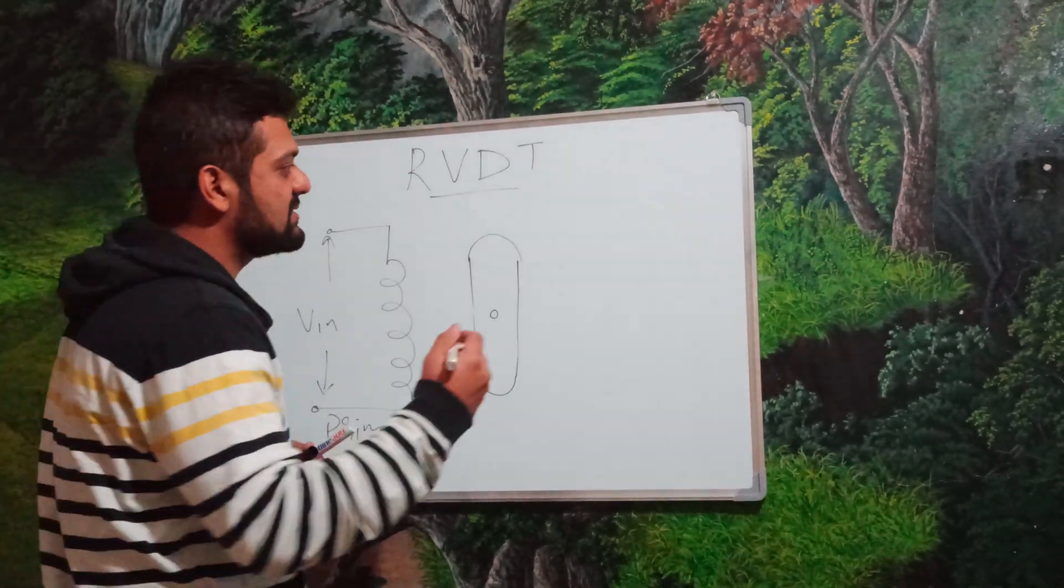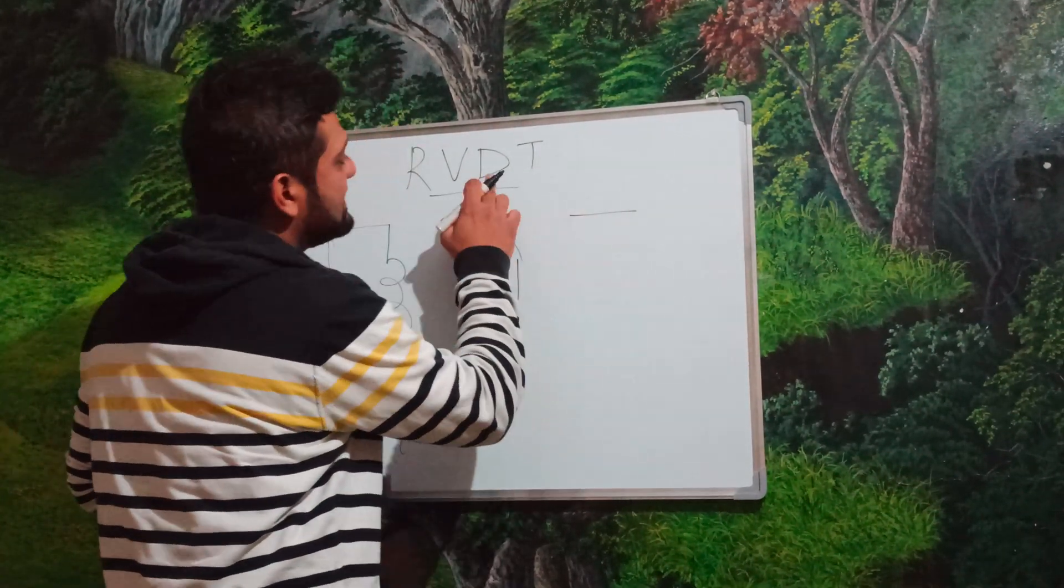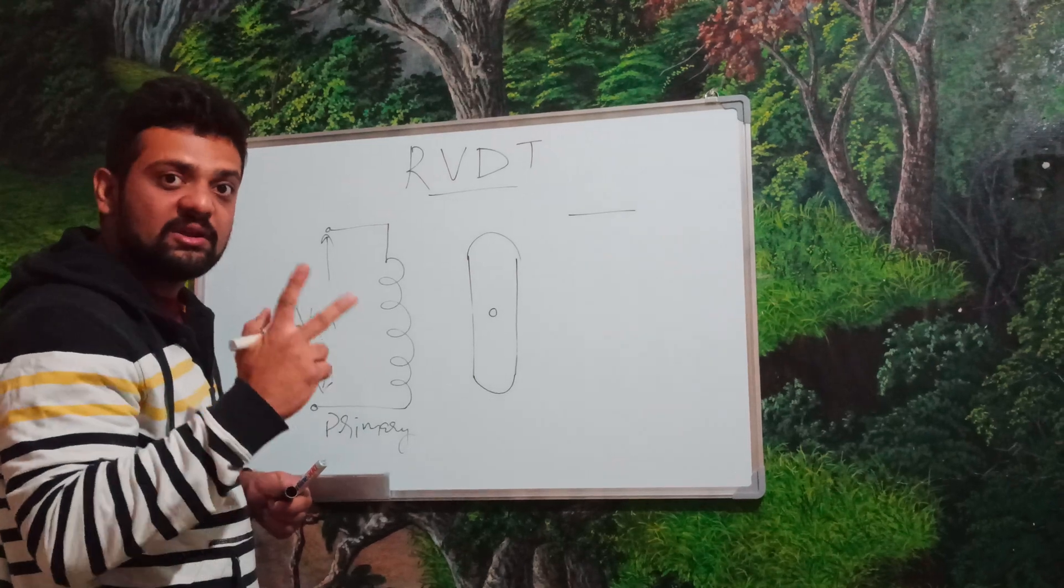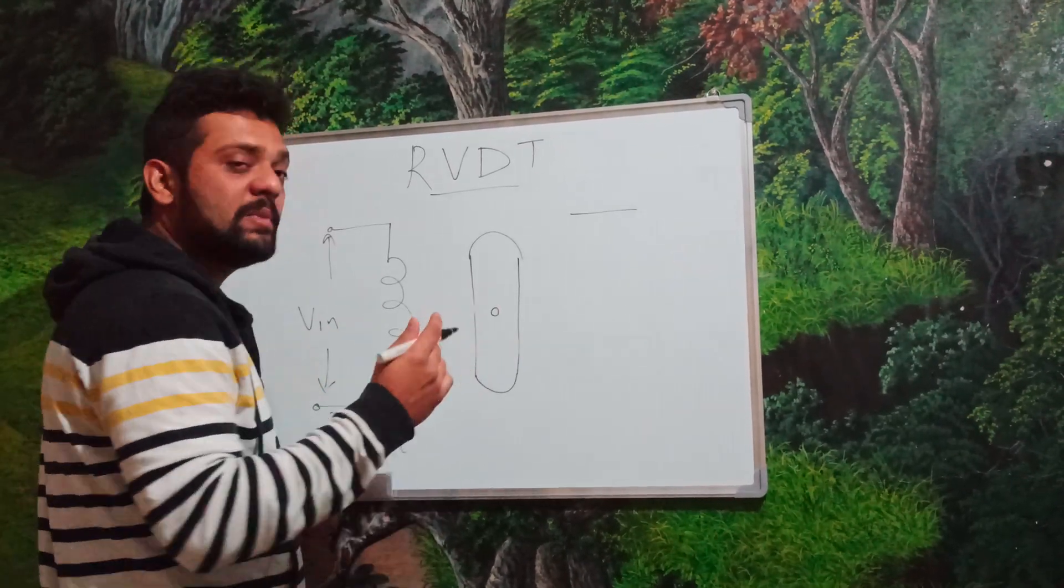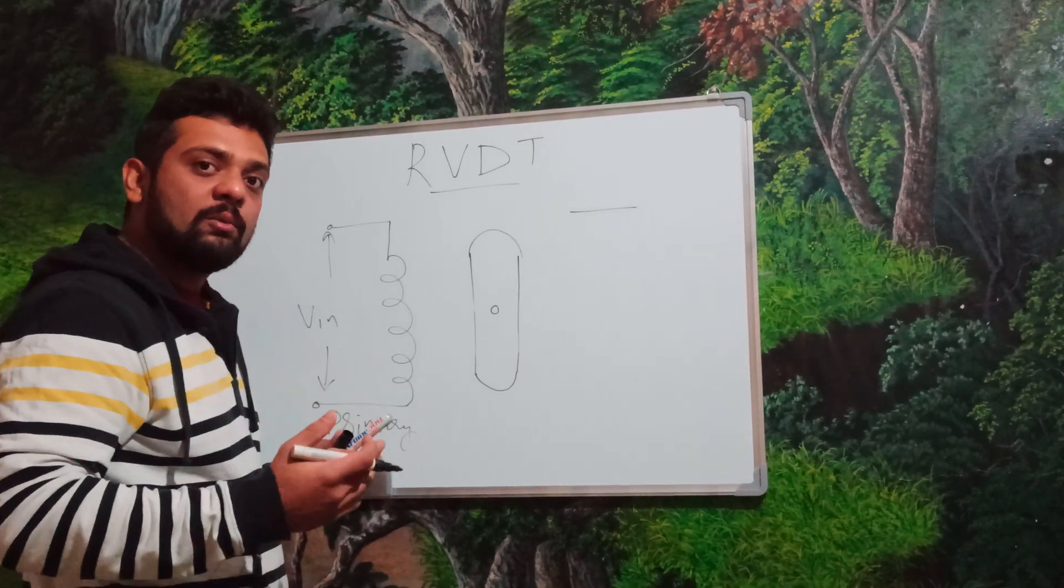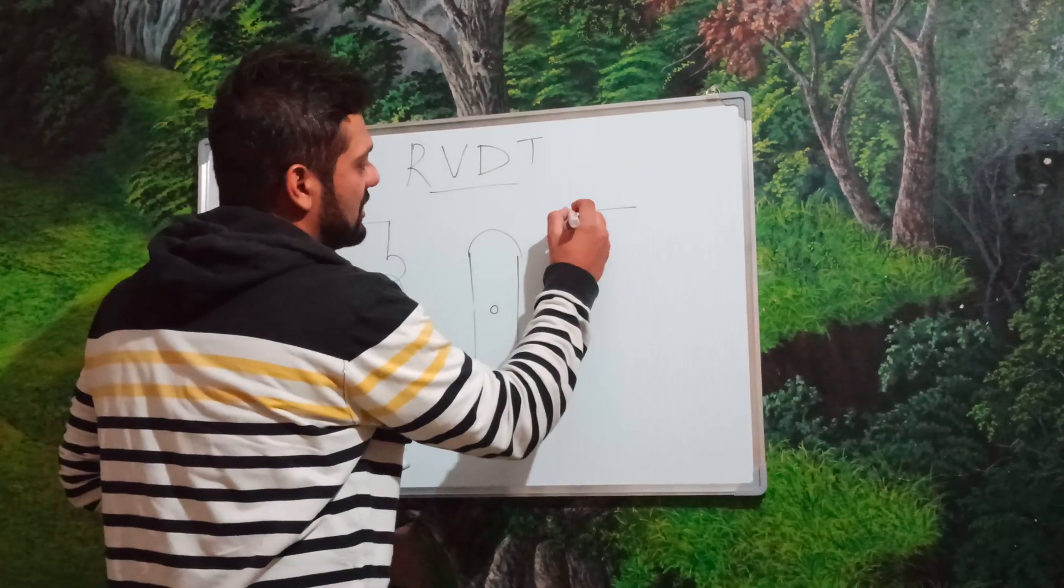Now, since this is a transformer, it is going to have the secondary coil and it is a differential transformer. So, there would be two secondary coils just like LVDT which would be connected in series but still they will keep on opposing each other's generated voltage.